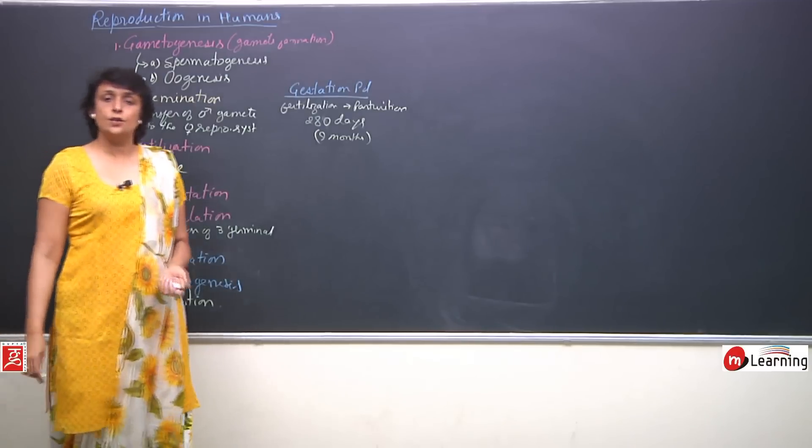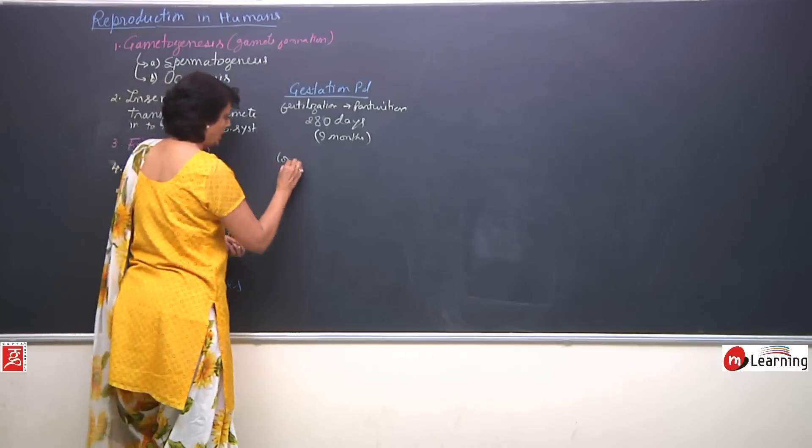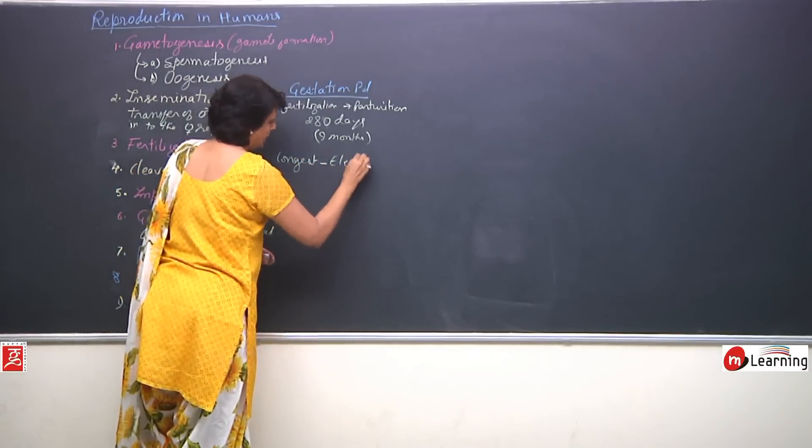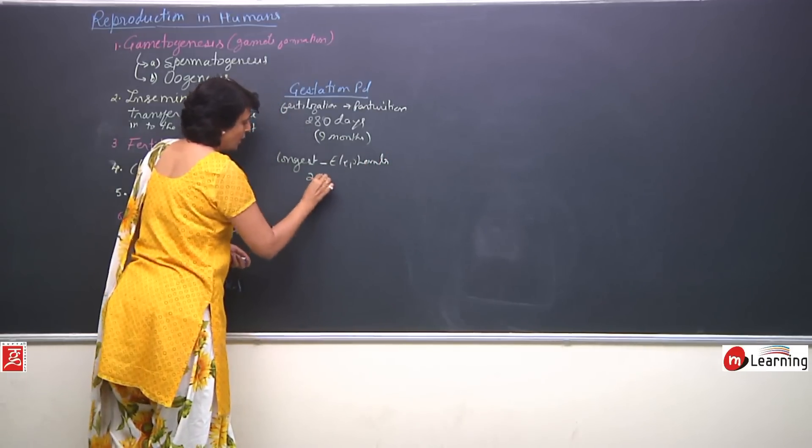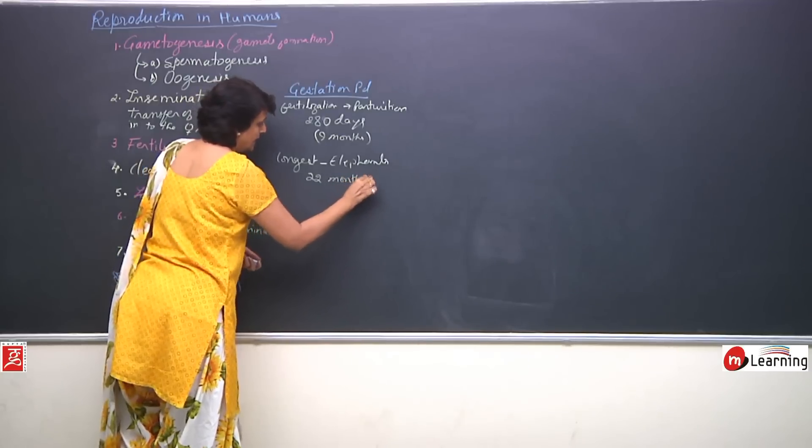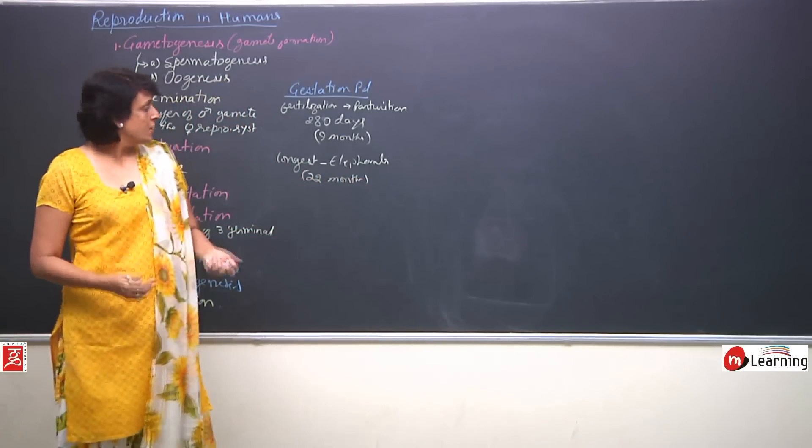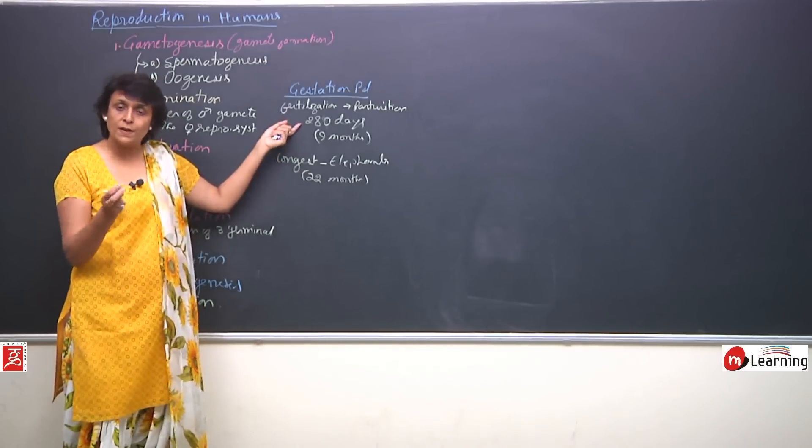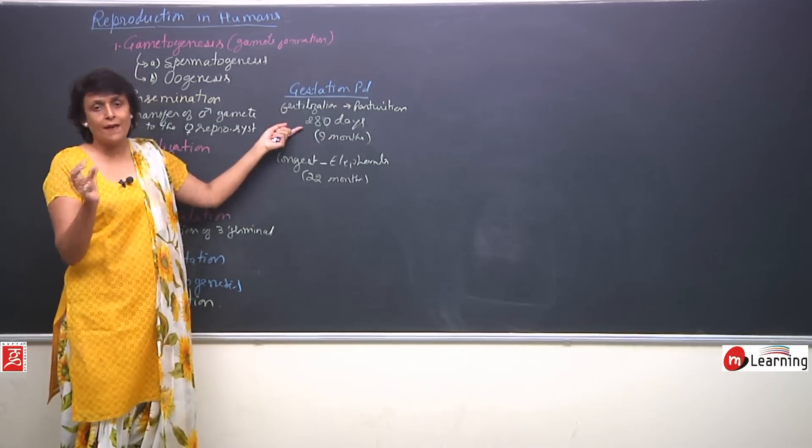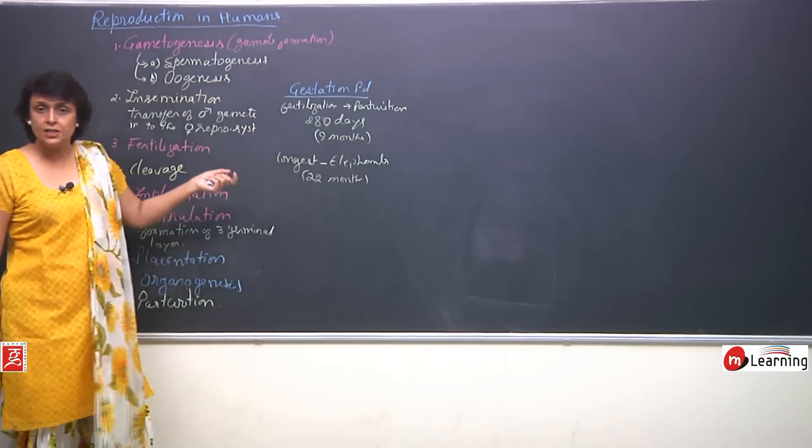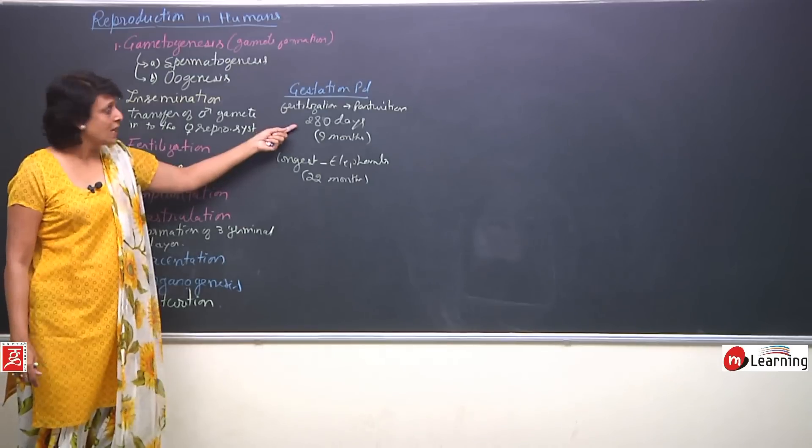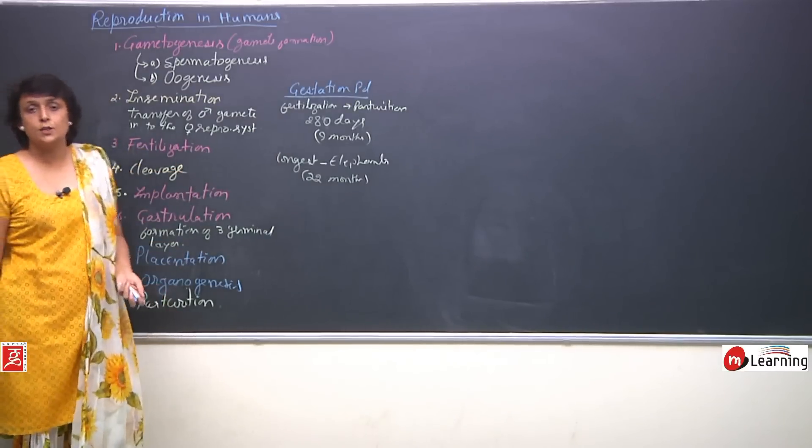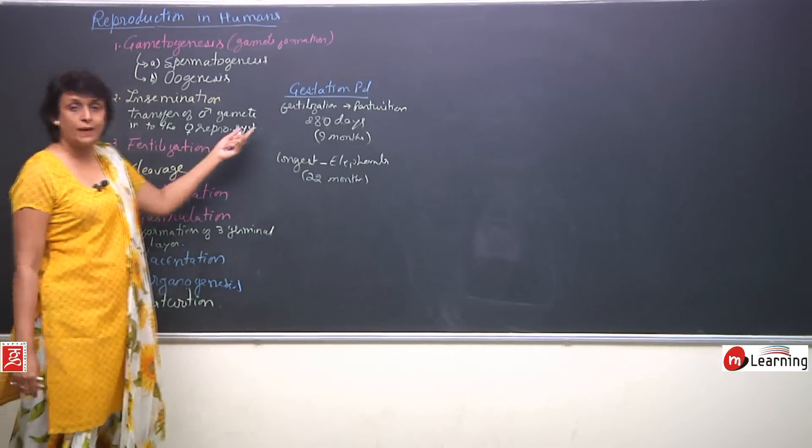The longest gestation period is in elephants. It is about 22 months, slightly shorter than 2 years. So, in human females in about 280 days and we are talking of approximately because it is not exactly 280, it may vary from female to female, there are various conditions which decide this. But approximately 280 days or 9 months fully formed fetus is expelled from the mother's body that is parturition. So, this period is gestation period.